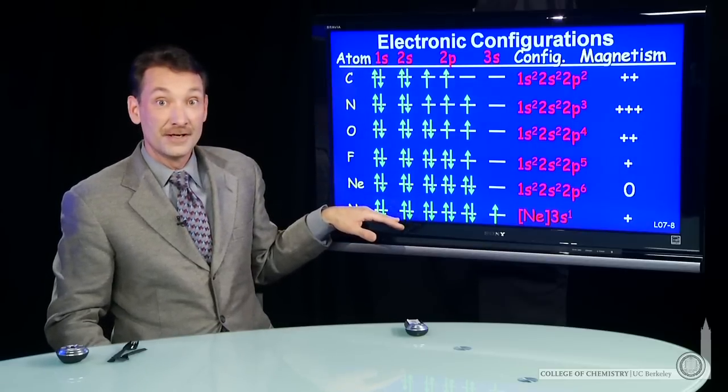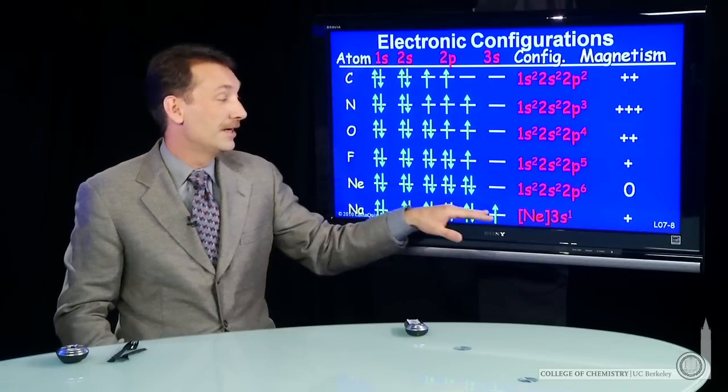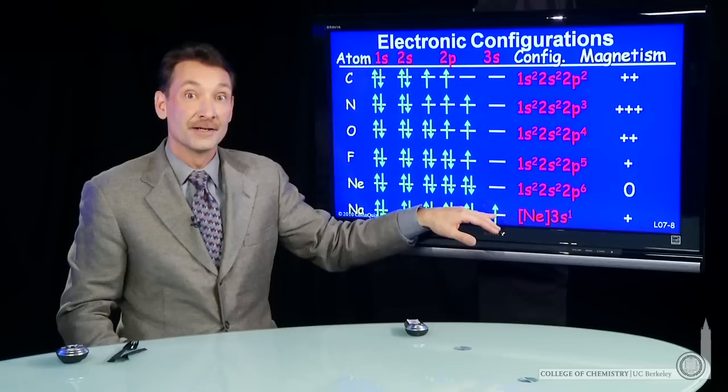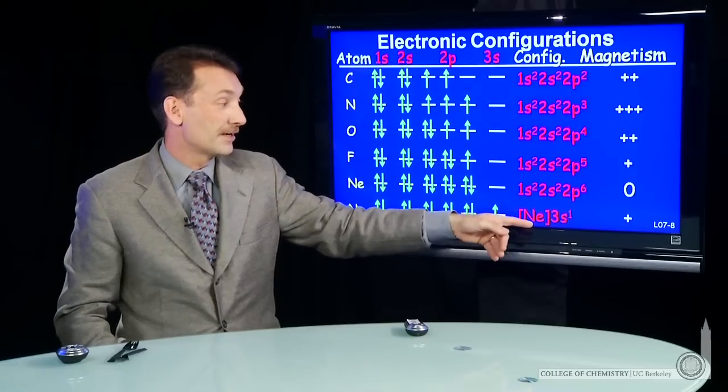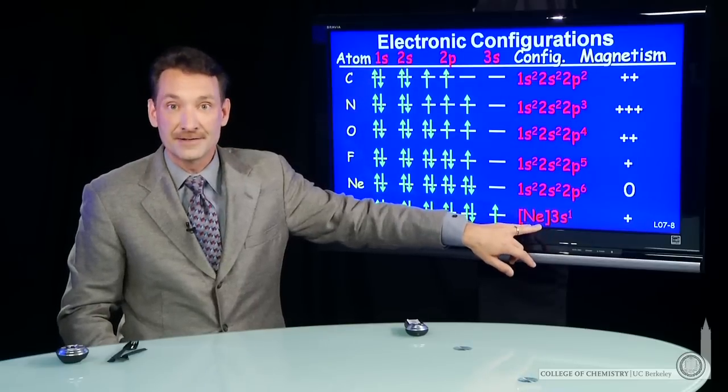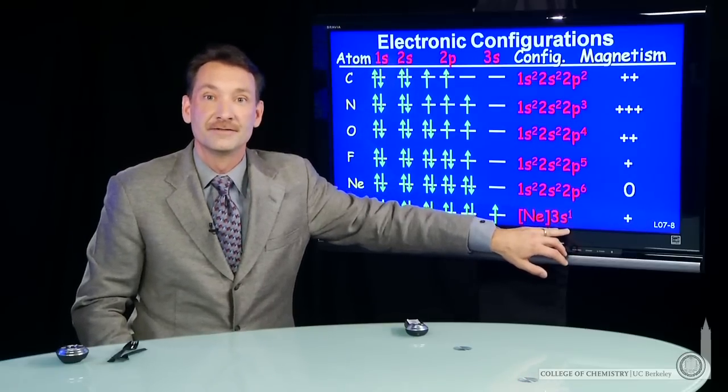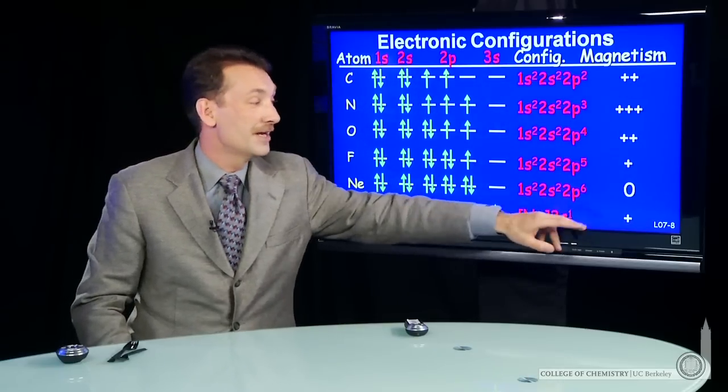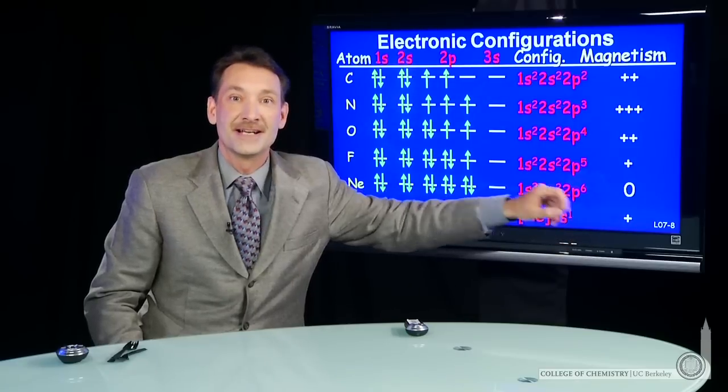But sodium, the next element on the periodic table, will have one more electron. And now we can start to use a shorthand in our electronic configurations. We can say sodium has all the electrons that neon has, plus a 3s1. And of course, an unpaired electron gives you a magnetic state.